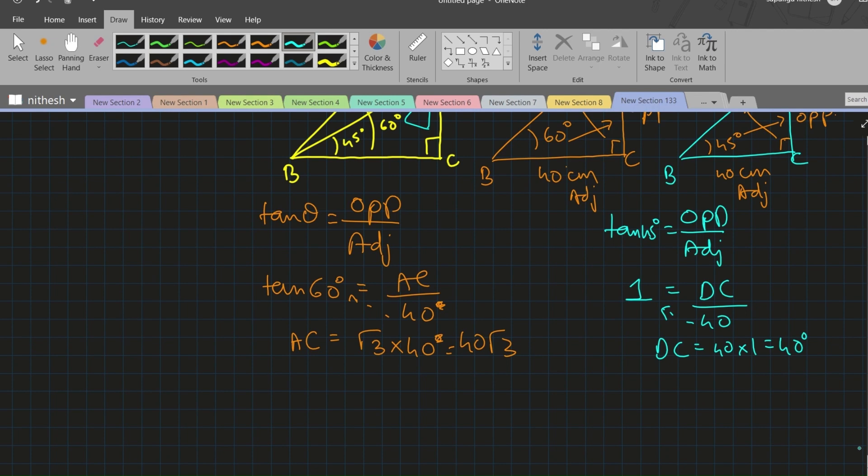As we know the value of AC and DC, we can find the value of AD. If you see, D is the point lying on the side AC, so we get AC is equal to AD plus DC.